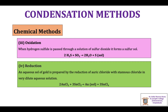Next is oxidation. Hydrogen sulfide is passed through a solution of sulfur dioxide to form a sulfur sol. In hydrogen sulfide, the oxidation state of sulfur is −2. Sulfur is oxidized from the −2 oxidation state to 0, resulting in the formation of the sulfur sol in water. The sulfur sol can also be obtained by passing oxygen through hydrogen sulfide, yielding the aqueous sol of sulfur.